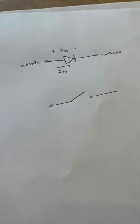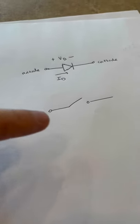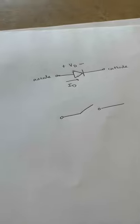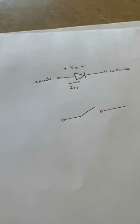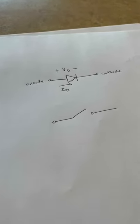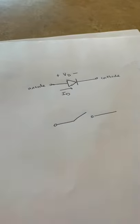An ideal diode acts like a switch where if the current is going from anode to cathode it's a closed switch or from cathode to anode it's an open switch. So current is only allowed to go one way.